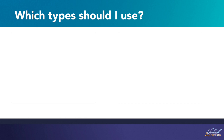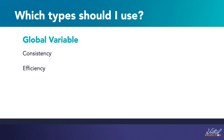Let's talk about why you would use each type of variable. Global variables, also known as custom properties, can be useful for a few reasons. They help maintain consistency throughout your website by providing a centralized location to define and update styles used across multiple elements or components. They also make your CSS code more efficient by reducing the amount of code you need to write and maintain, allowing you to easily reuse styles without repeating the same values. Additionally, global variables provide flexibility by allowing you to define styles that can be easily customized or adapted for different contexts or states.